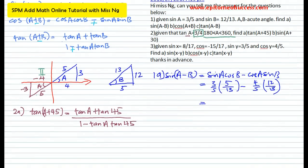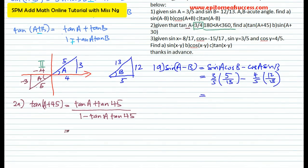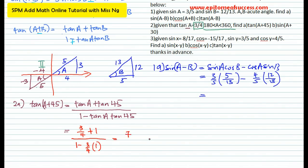Now substitute the correct fractions. Tangent A is 3 over 4 — that's already given. Tangent 45 is 1. You should know this by now; it's one of the special angles — 30, 60, and 45. So it becomes: (3/4 + 1) over (1 minus 3/4 times 1). If you calculate this, you should get 7. That's it for that part.